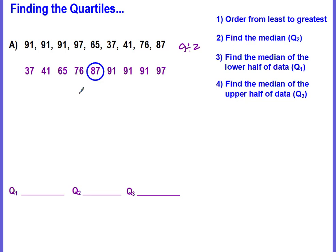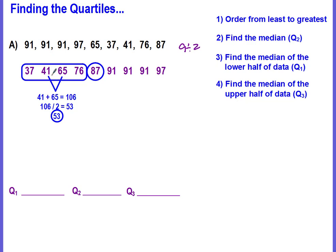Then we want to find the median of the lower half of the data — all of the data to the left of the median. There are four numbers, so the median is going to fall in between the 41 and the 65. We add them up and divide by two: 41 plus 65 is 106, divide by two and we get 53. So the median of the lower half is 53 — this is our quartile one.